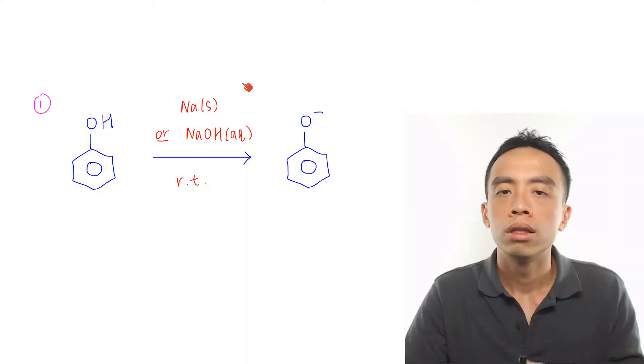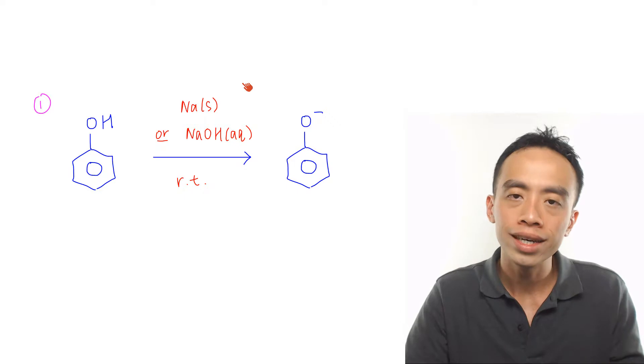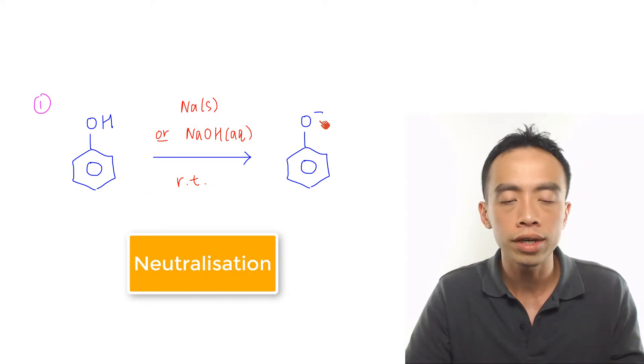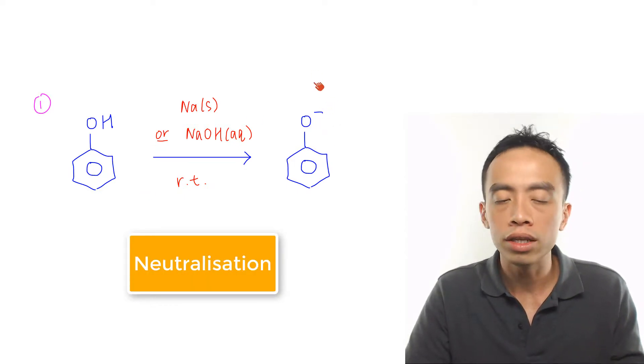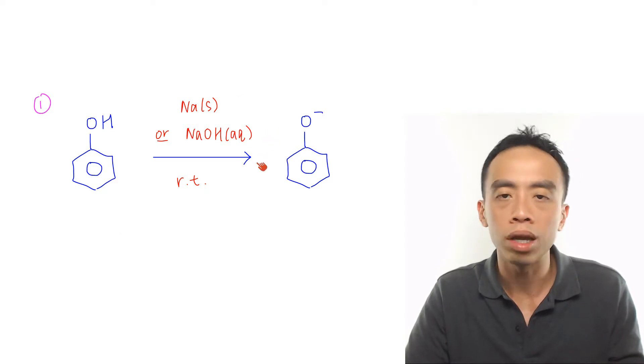Now that we have gone through the 7 major reactions of alcohols, let's talk about the 5 major reactions of phenol. The first major reaction of phenol is the acid-base reaction to form phenoxide. This is done using sodium metal or NaOH aqueous at room temperature.